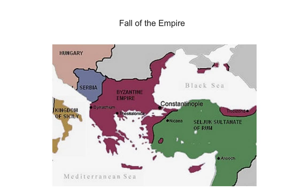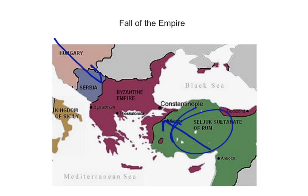One of the things the empire deals with externally — and which turns into internal problems — is a series of plagues. There's one that happens under Justinian's reign, and plagues that happen later as well. One of the biggest external threats: in 1071, the Battle of Manzikert takes place in Asia Minor. The Seljuk Turks win and now have control of most of Asia Minor, so you can see the Byzantine Empire is shrinking.